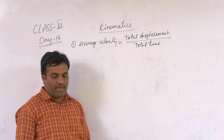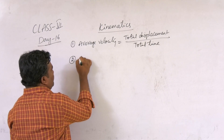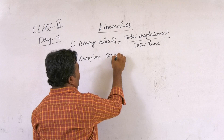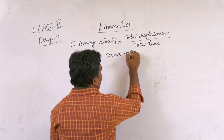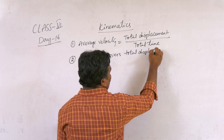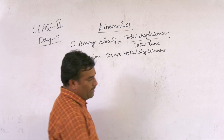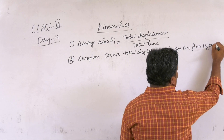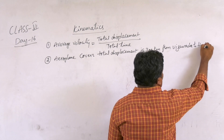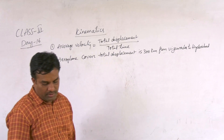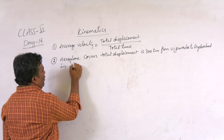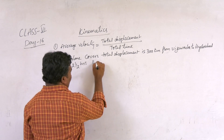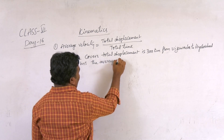Next, another question. We are discussing Average Velocity here. An aeroplane covers a total displacement of 300 km from Vijayawada to Hyderabad in two and a half hours. The question is: what is the average velocity?